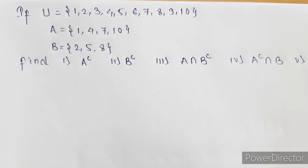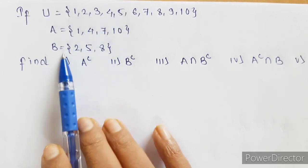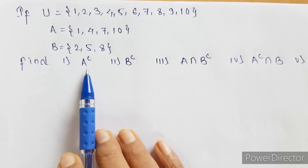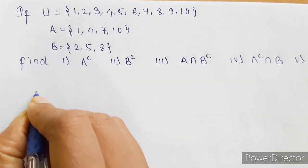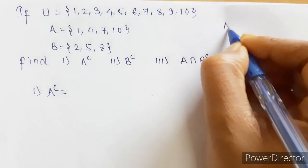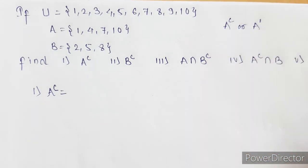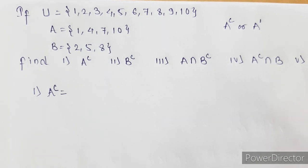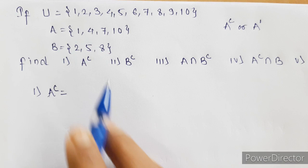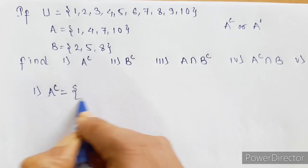Let us discuss another example on complement. Here the universal set is given, set A and set B are given. First, we have to find A complement. Complements are denoted by either the superscript C or A dash — both are symbols for complement. So here I am using C. A complement is nothing but the set of all elements which are in the universal set but which are not in set A.